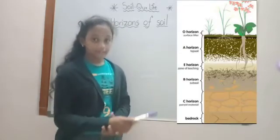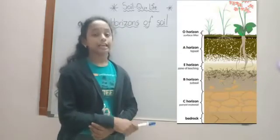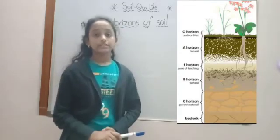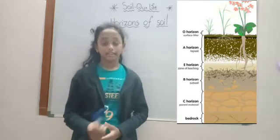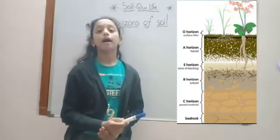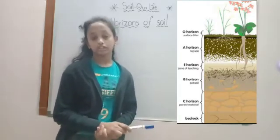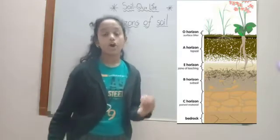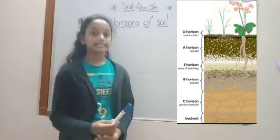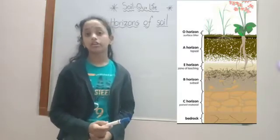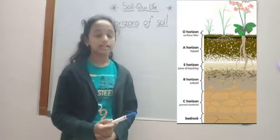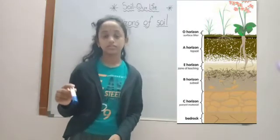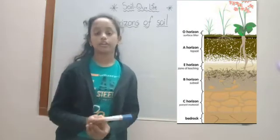The E-horizon is a leaching layer that is light in color. It is found beneath the A-horizon and above the B-horizon. It is made up mostly of sand, having lost most of its minerals and clay when water passes through the soil.